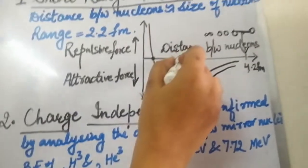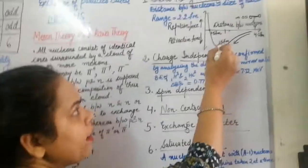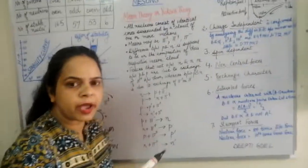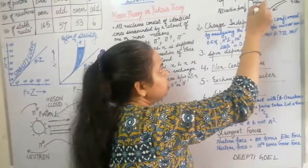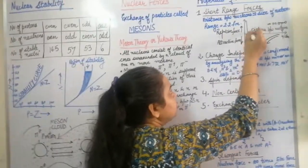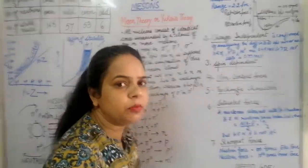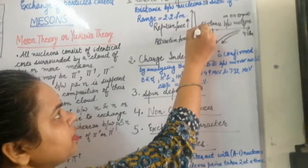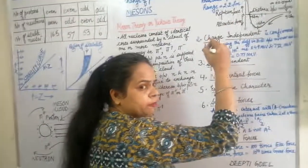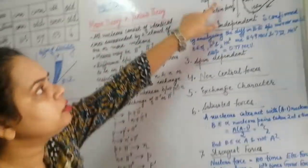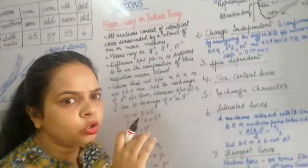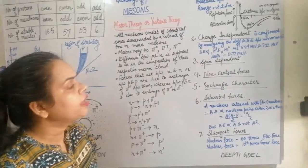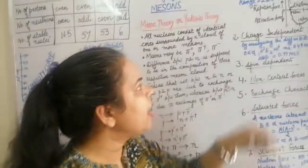Beyond 1.5 Fermi, if we further decrease the distance, the attractive force starts decreasing because Coulombic repulsions begin to exceed the attractive force. At 0.5 Fermi, the nucleons experience no attraction and no repulsion. If we try to decrease the distance beyond 0.5 Fermi, the nucleons suffer heavy repulsion and are forced to move apart. The range within which nuclear forces operate was measured to be 2.2 Fermi.